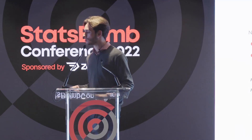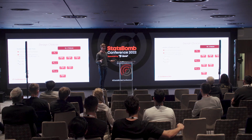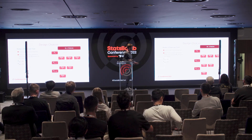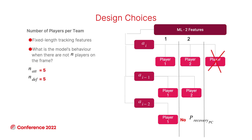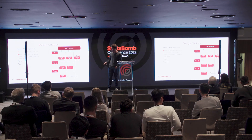The next design choice concerns the number of players per team. With 360 data, we have a limited number of visible players per frame, and machine learning algorithms require a fixed length of tracking features. If we define the number of most-relevant-ranked players as two, then when we have more players we only consider that number, and when we have fewer players we will not calculate peer recovery PC, as we consider there is not enough spatial context for such a calculation.